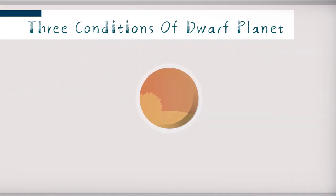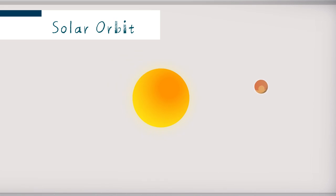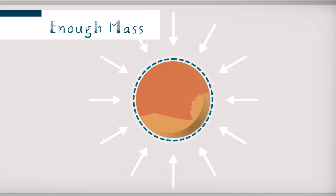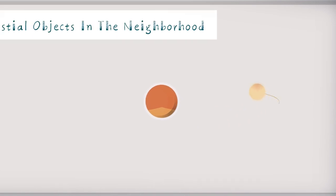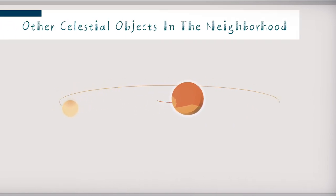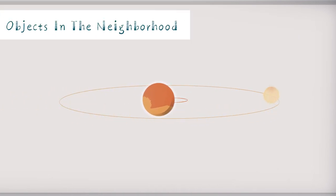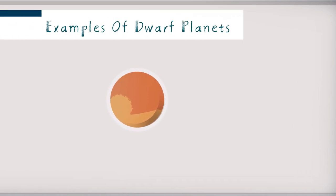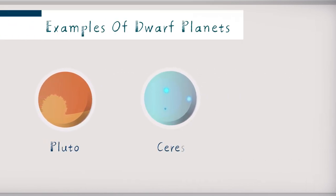A celestial body needs to satisfy three conditions in order to be classified as a dwarf planet. First, it must have a solar orbit. Second, it must have enough mass to maintain a spherical shape. Third, it must have other celestial objects in the neighborhood of its orbit and must not be a satellite of another planet. Examples of dwarf planets include Pluto, Ceres, and Eris.